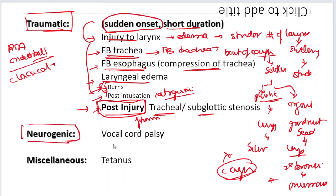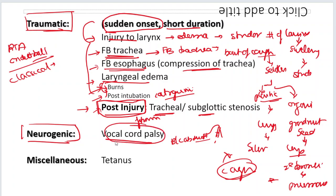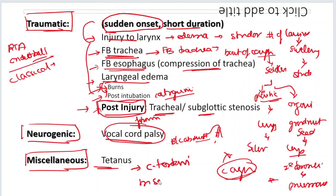Neurogenic causes: vocal cord palsy — bilateral abductor palsy, inability to abduct, so the cords are close to each other and the patient cannot breathe. Vocal cord palsy can cause Strider. Miscellaneous: tetanus, caused by Clostridium tetani — there are muscle spasms all over the body and all the muscles can cause Strider. So these are the causes of Strider.